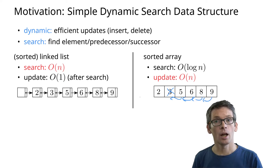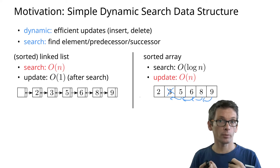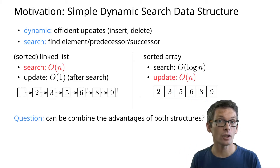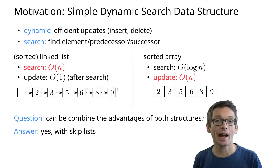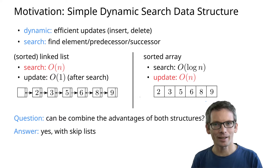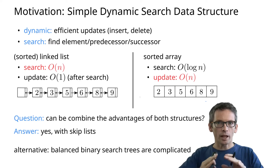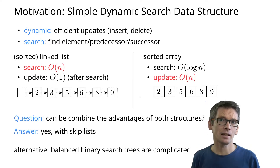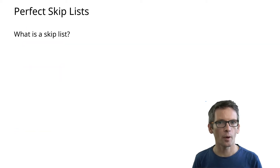So on the one side we have a data structure with which we can search efficiently, on the other side one with which we can update efficiently. Now the question is can we combine the advantages of those two data structures, and the answer obviously is yes — using skip lists. Now you might say we can use a balanced binary search tree, but today we're looking for a simple data structure, and arguably the balancing in a balanced binary search tree is not that simple. So let's see what a skip list is, and we're going to start with a perfect skip list.